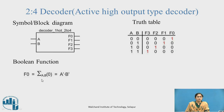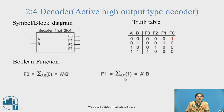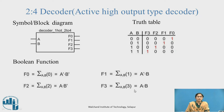Boolean functions: F0 = Ā·B̄ (0th minterm). F1 = Ā·B (1st minterm). F2 = A·B̄ (2nd minterm). F3 = A·B (3rd minterm). These are obtained from the truth table.